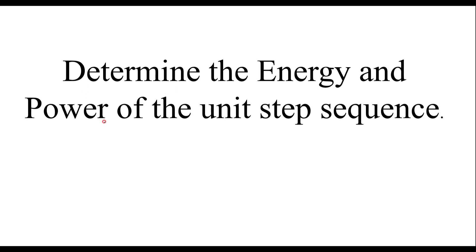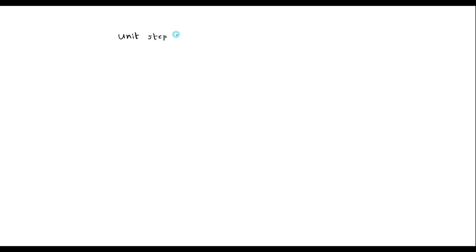Determine the energy and power of the unit step sequence. The unit step signal is represented as U of n, where its value is 1 for n greater than or equal to 0, and U of n is 0 for n less than 0. This is the definition of unit step sequence. Now let me find the power and energy of this signal.